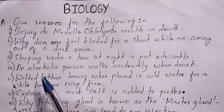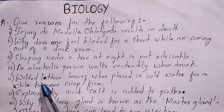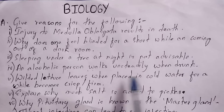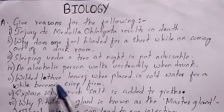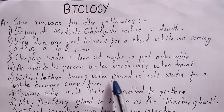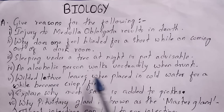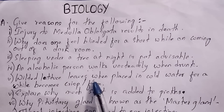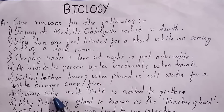Question 5: Why do wilted lettuce leaves, when placed in cold water for a while, become crisp or firm? Wilted lettuce leaves become crisp or firm because they absorb water through endosmosis and the cells of the leaves become turgid.